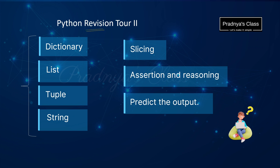Now it's time to check out Chapter 2, that is Python Revision Tour 2. Generally you will be getting MCQs which will be based on dictionary, list, tuple, and string functions. So make sure you are clear with all the functions and methods associated with all these four data types. I always suggest to write all the functions and methods on one paper. There are high chances that you will definitely get one question based on slicing and it can be on list, tuple, or string. In section A for one mark, you will be getting a question in the form of assertion and reasoning.